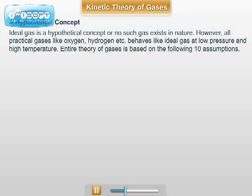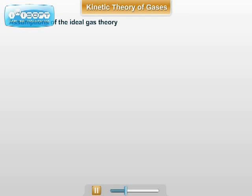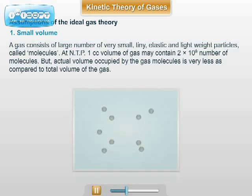The entire theory of gases is based on the following assumptions. The assumptions are as follows. 1. Small volume: A gas consists of large number of very small, tiny, elastic, and lightweight particles called molecules. At NTP, 1 cubic centimeter volume of gas may contain 2 into 10 raised to 19 number of molecules. But actual volume occupied by the gas molecules is very less as compared to the total volume of the gas.